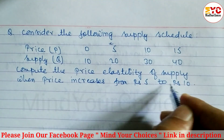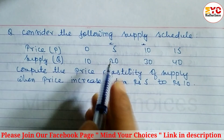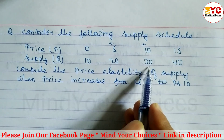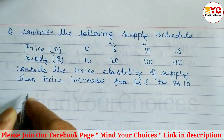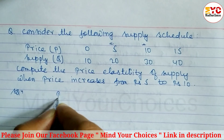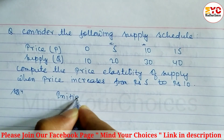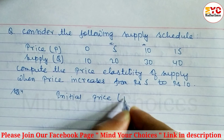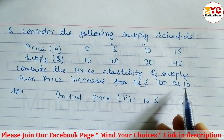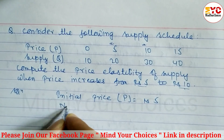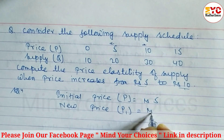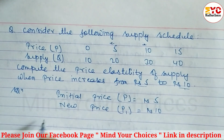When the price is 5, quantity supplied is 20; when the price is 10, quantity supplied is 30. The initial price P is equal to rupees 5, and the new price P1 is equal to rupees 10.